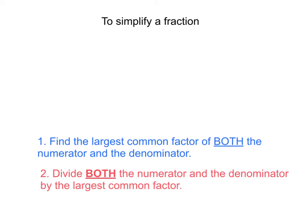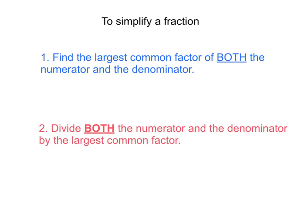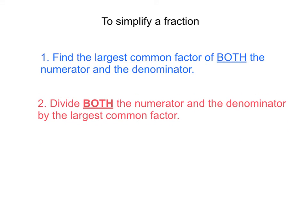Now I'm going to think about how I can simplify the fraction. There's two steps to take. First, I've got to find the largest common factor of both the numerator and the denominator. Secondly, I have to divide both the numerator and the denominator by the largest common factor.